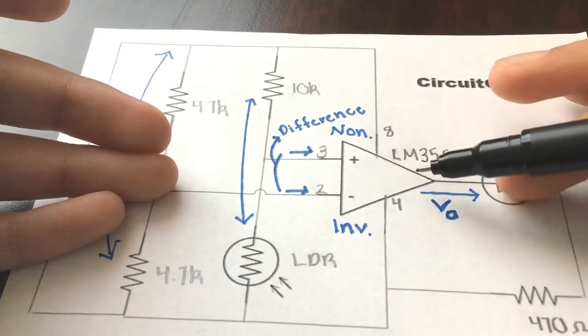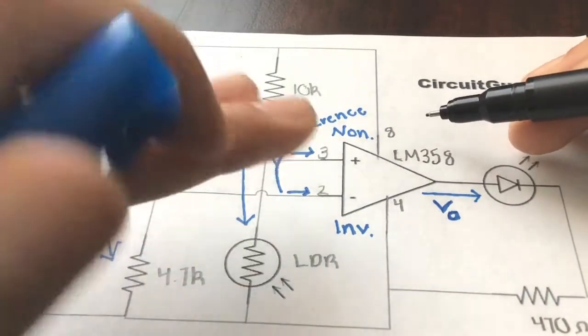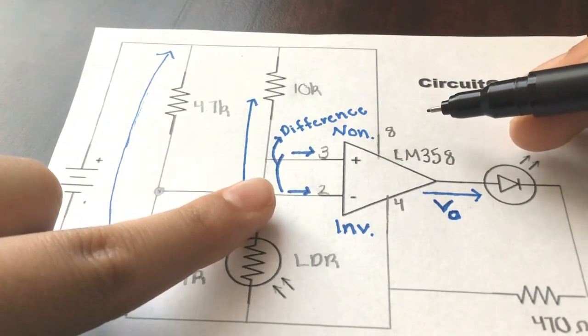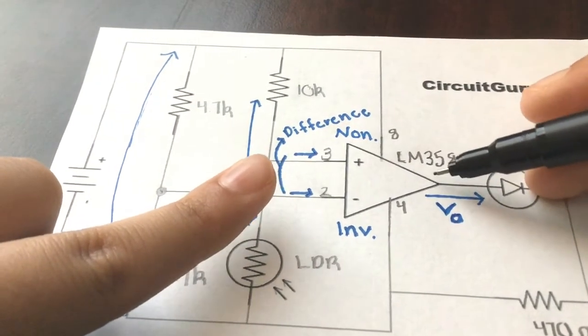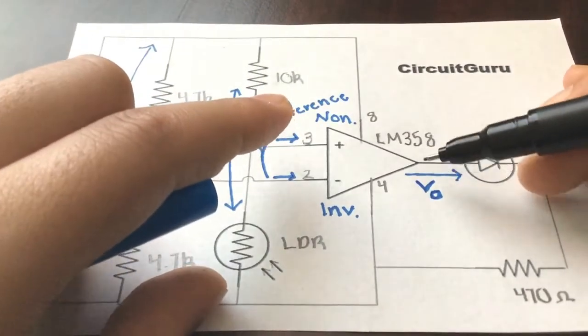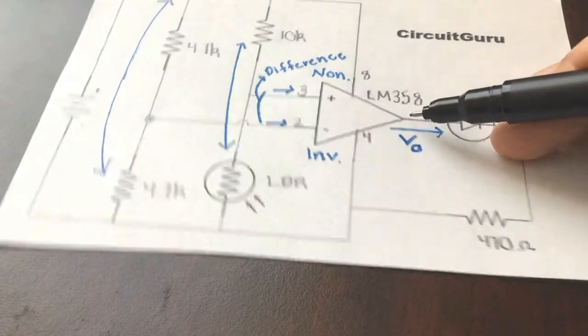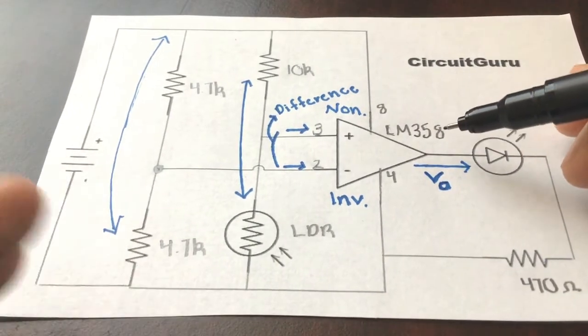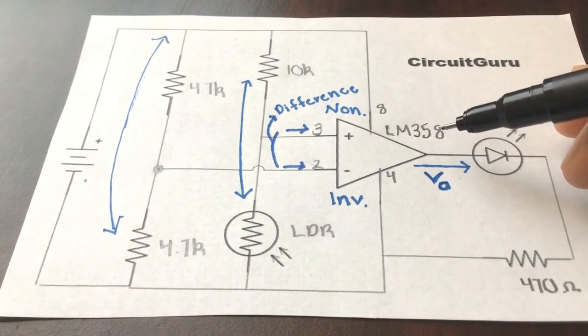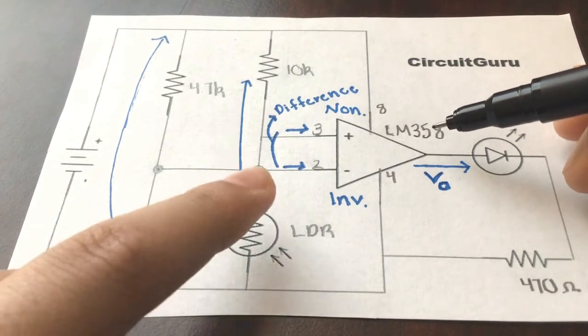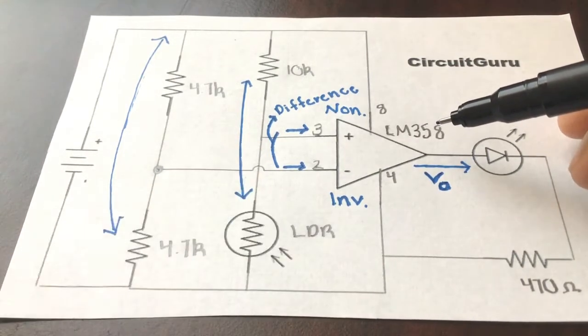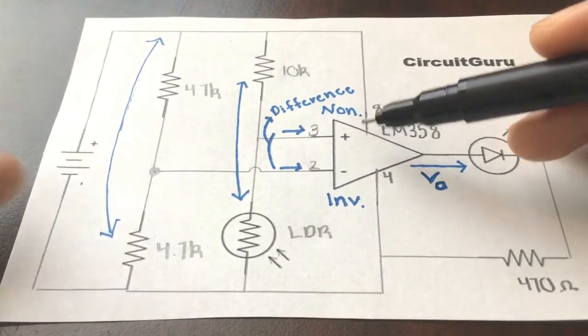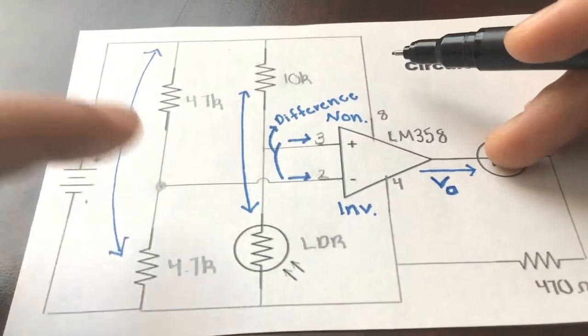It will compare that and give a certain output depending on how much light you give on that. For example, right here there's barely any light on it, so it won't give out as high of a voltage output. But now there's so much light on it, so it'll give a pretty low voltage output, and it'll give it high when it senses this right here. This is basically just a dark sensor, and the concept is finding the difference between the two voltages coming from the voltage divider and the LDR and giving an output voltage right over here.